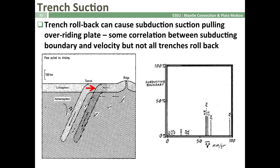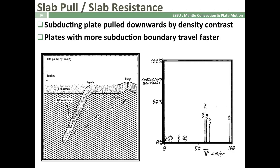We've got two possible forces at work here. The first is a suction force caused by trench rollback. If we have an old oceanic lithosphere which is dense, it wants to subduct, and the hinge of where subduction actually occurs can roll back towards the ridge. In doing so, it will pull the overriding plate towards it — the so-called subduction suction force. However, not all trenches show rollback. A much more general candidate for a driving force of plate tectonics is slab pull. Essentially, the denser subducting slab — more dense than the surrounding mantle — provides a gravitational driving force for plate motion.